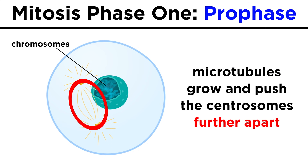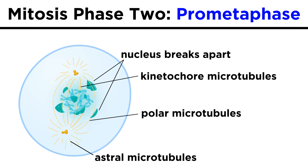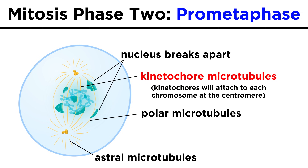As the cytoskeleton disassembles, the microtubules between the centrosomes grow and grow, which pushes them apart. Then in the prometaphase, the nucleus breaks apart, and the growing microtubules cover the area where the nucleus used to be, so that they can attach to special proteins called kinetochores, which have assembled on the chromosomes at their centromeres.